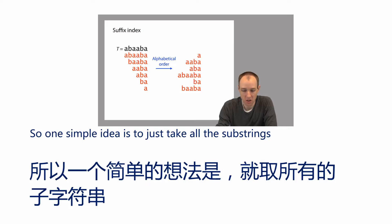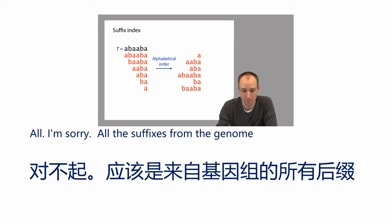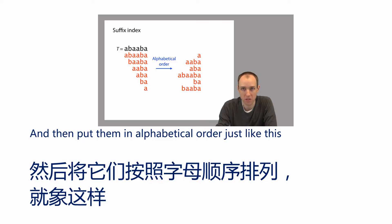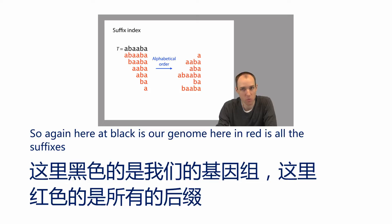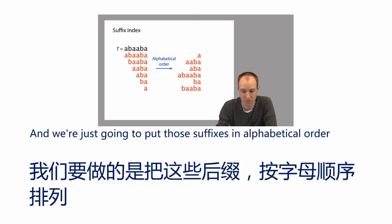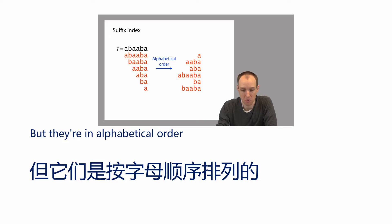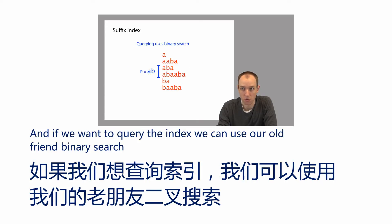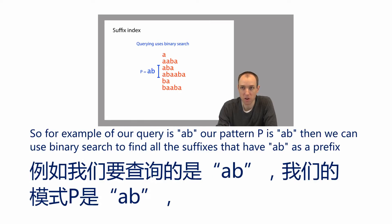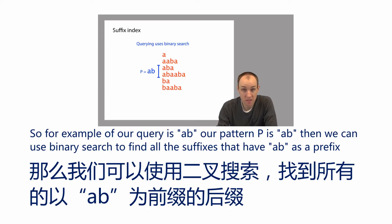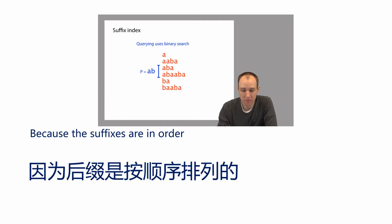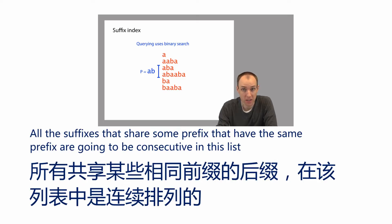One simple idea is to take all the suffixes from the genome and put them in alphabetical order. Here in black is our genome, here in red are all the suffixes, and we put those suffixes in alphabetical order. Now we have a list of all the suffixes of the genome in alphabetical order. If we want to query the index, we can use binary search. For example, if our pattern P is AB, we can use binary search to find all of the suffixes that have AB as a prefix. Because the suffixes are in order, all suffixes that share the same prefix will be consecutive in this list.